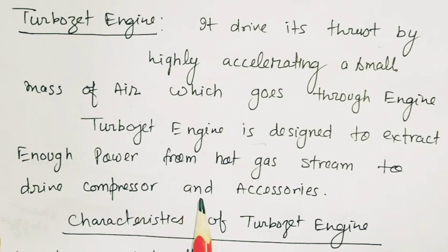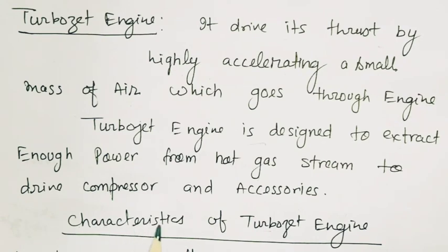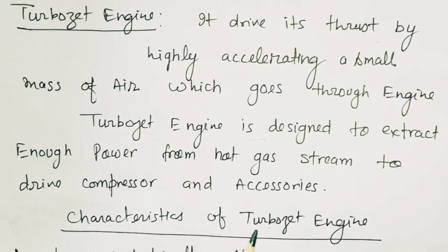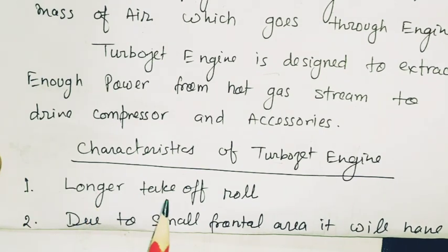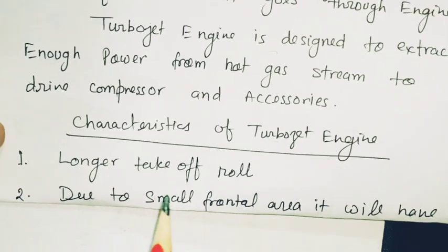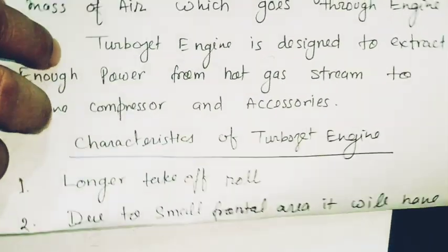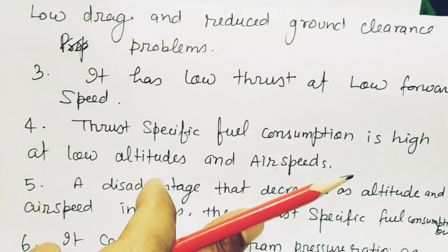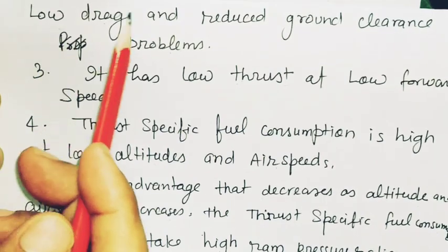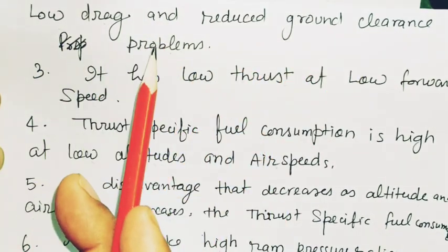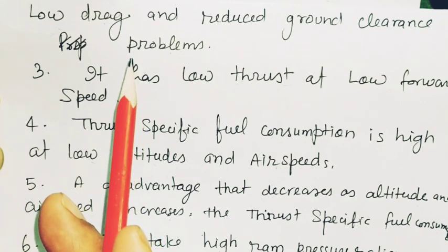What are the characteristics of this engine? Now we can see these characteristics. Number one: longer takeoff and roll. This kind of engine needs a longer runway for takeoff and landing. Second point: due to small frontal area, it will have low drag and reduced ground clearance problem.